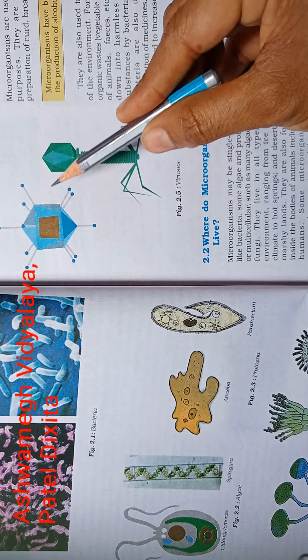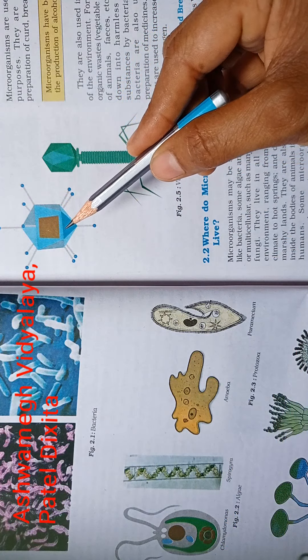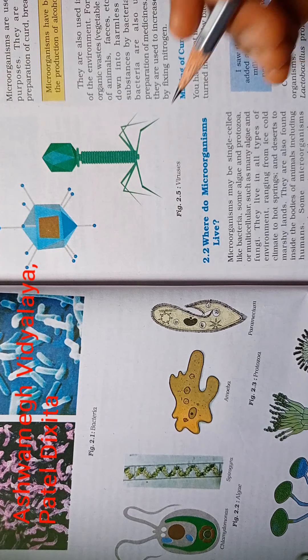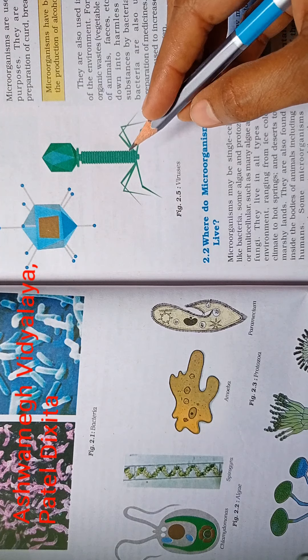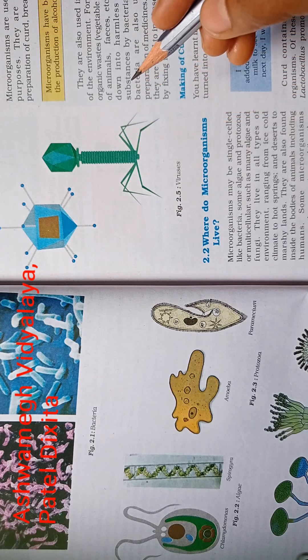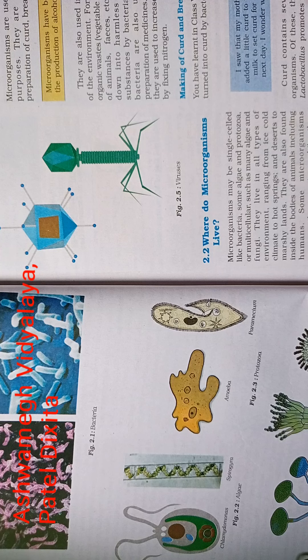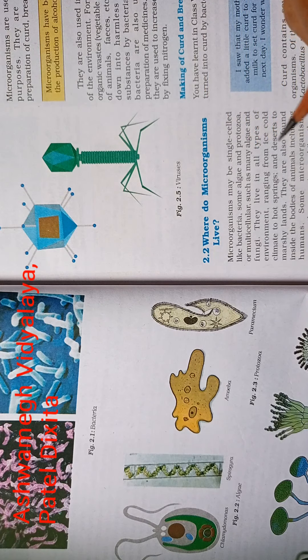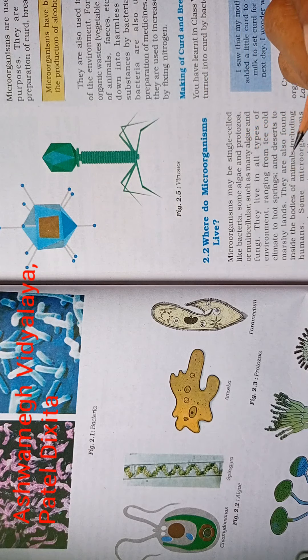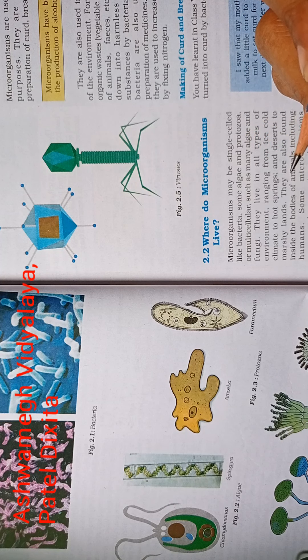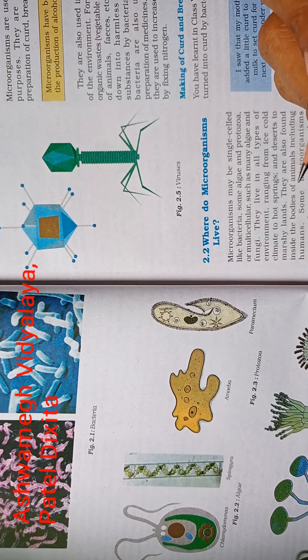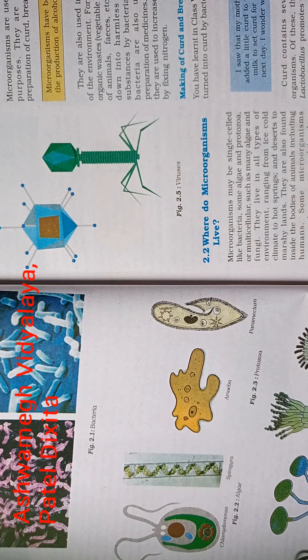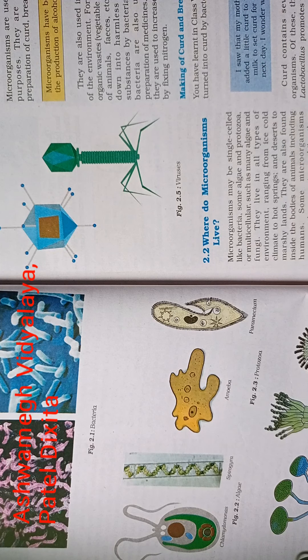Then the second one is virus. Virus are also microscopic but are different from other microorganisms. They reproduce only inside the cell of the host organism. They can reproduce in the body of the host organism like plants, animals, and bacteria. They can reproduce in different organisms.